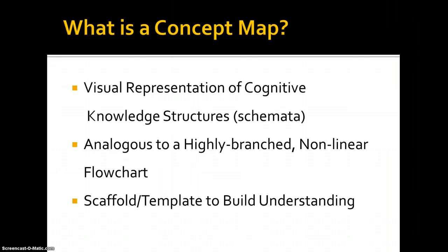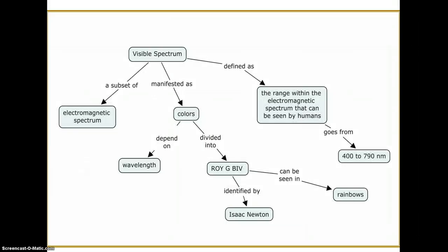Let's look at some examples of concept maps. This first one is a simple one I created using CMAP tools about the visible spectrum. Here's my main topic, and I've generated a few concepts about that: the range within the electromagnetic spectrum that can be seen by humans, colors, wavelength, Isaac Newton. These are all important concepts related to the visible spectrum.